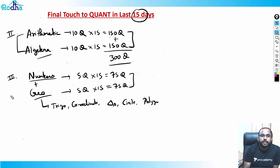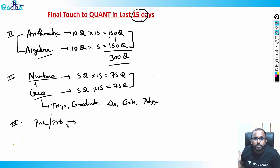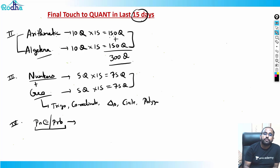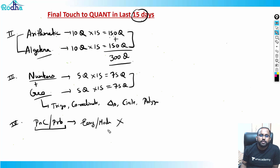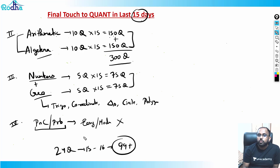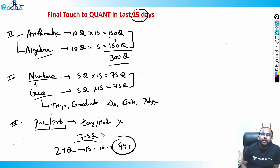Also cover permutations and combinations plus probability. Even if you haven't paid much attention to these topics, revise all the videos in the playlist. That ensures you don't miss any easy or moderate question. Tough questions we can miss — out of 24 questions, solving around 15 to 16 is enough for 99-plus. We can afford to leave seven or eight tough questions, but we cannot leave any easy or moderate question.